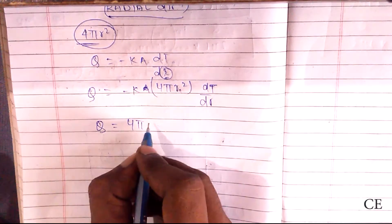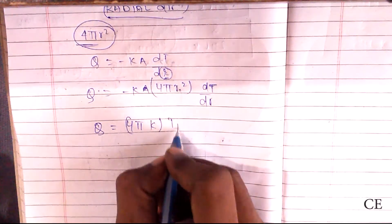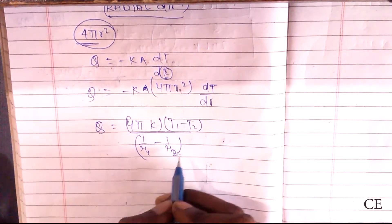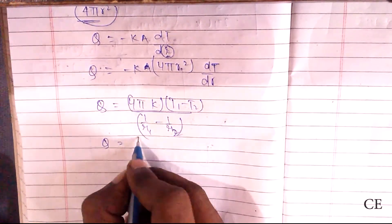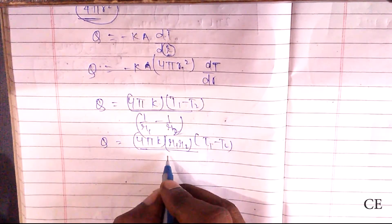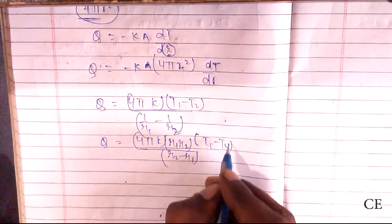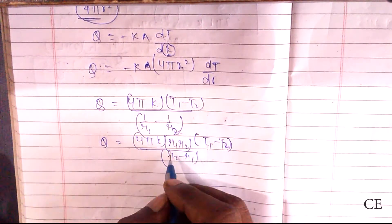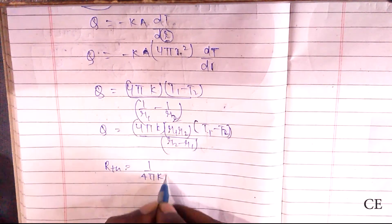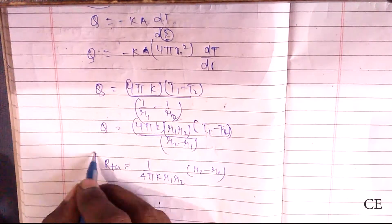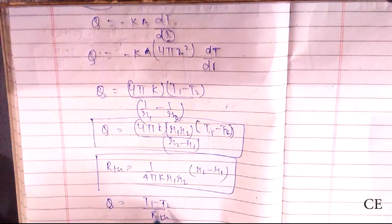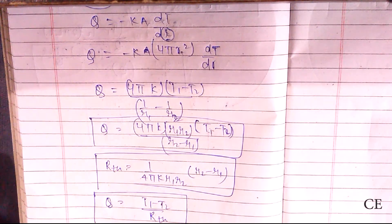The final equation for heat transfer through a sphere is: Q equals 4πK times r1 times r2 times (T1 minus T2) divided by (r2 minus r1). The thermal resistance Rth equals (r2 minus r1) divided by (4πK times r1 times r2), giving Q equals (T1 minus T2) / Rth.